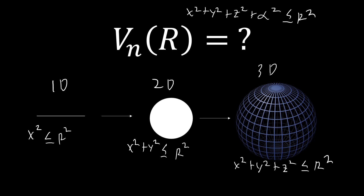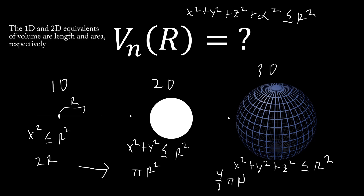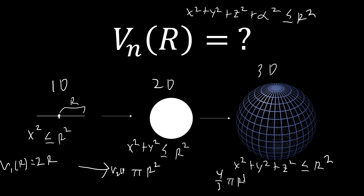Let's go through the formulas we already know. In one dimension, the volume is really just the length of the line: 2r. For a circle it's πr². And for a sphere it's (4/3)πr³. These are V₁(r), V₂(r), and V₃(r), and we want to find a general formula for Vₙ(r).